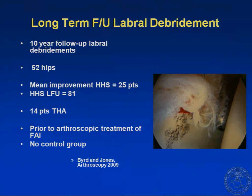Looking at some long-term follow-up data provided by Tom Bird — 10-year follow-up in 52 hips — the mean improvement in modified Harris Hip Score was 25 points, and 14 of those patients went on to total hip arthroplasty. This is prior to arthroscopic treatment of FAI or labral repairs. Good long-term outcomes can be obtained, but unfortunately there is no control group, so we don't know whether repair or treatment of associated impingement would have changed outcomes.